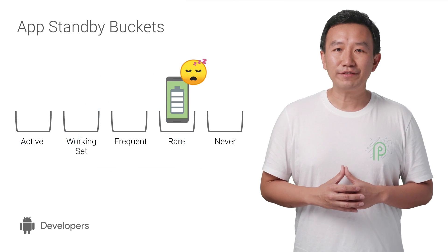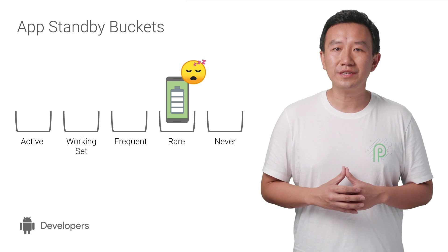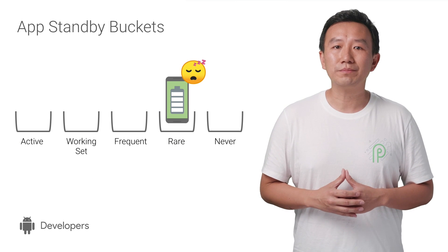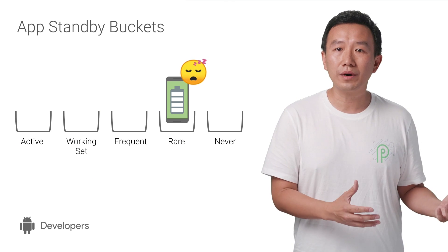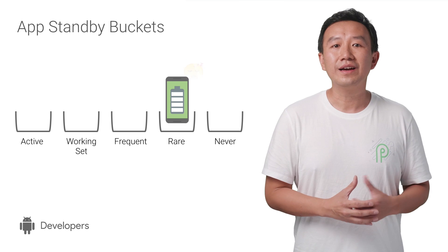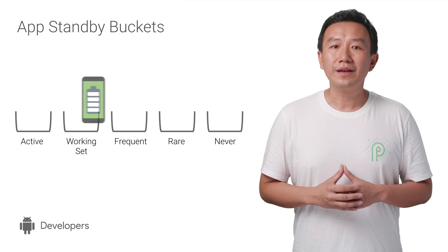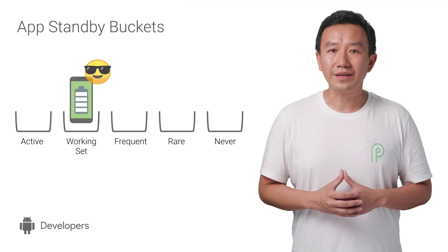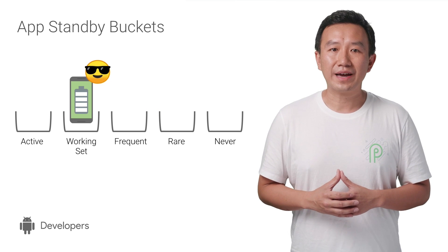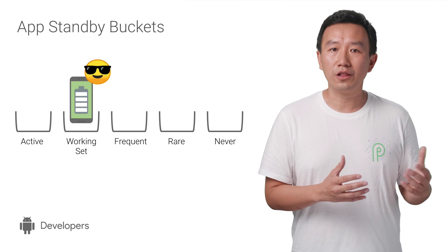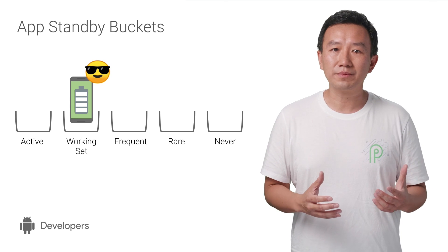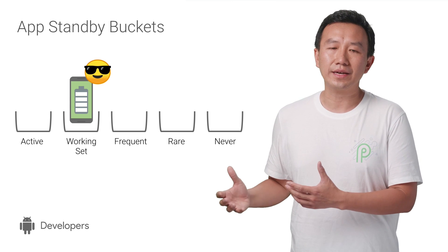Apps that haven't been actively used for a certain time would be put into an appropriate lower bucket. Accordingly, the system would progressively defer app tasks such as alarms, jobs, and network access.